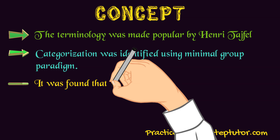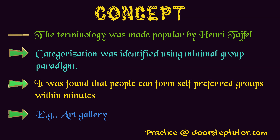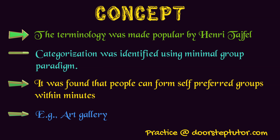After this experimentation, it was found that people can form self-preferred groups within minutes. For example, when we go to a new college or school, it takes hardly 5 to 10 minutes to form groups because we can quickly identify what our likes are and what other people's likes are. The experiment was also done on the basis of a painting — when people go to an art gallery, very few actually understand the message behind modern art, and those people can create a group within minutes, eliminating those who are just there for the sake of it.